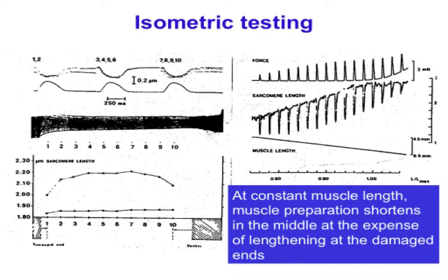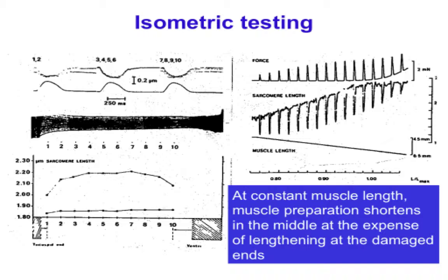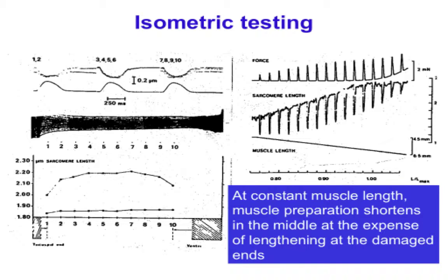In an isometric experiment, you hold the muscle length fixed, stimulate electrically, and get a twitch. But even though muscle length is held constant, the sarcomeres actually get shorter as force rises, because non-contractile tissue at the ends is being stretched. By scanning the laser along the trabecular preparation, you can see that regions between positions 1 and 10 are all contracting, but shortening. Beyond those positions, the damaged tissue or valve regions are actually lengthening as the healthy center shortens.